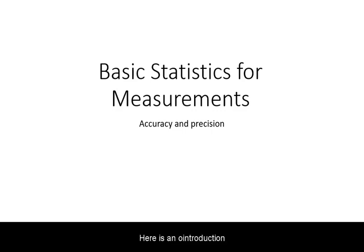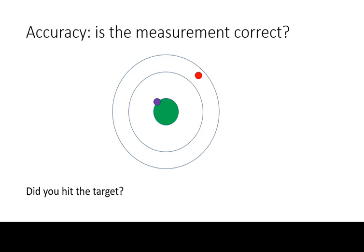Here is an introduction to basic statistics for measurements. When a measurement is accurate, then it is close to being correct. The closer the measurement is to the correct answer, the more accurate it is.